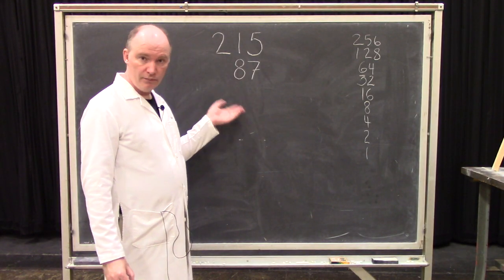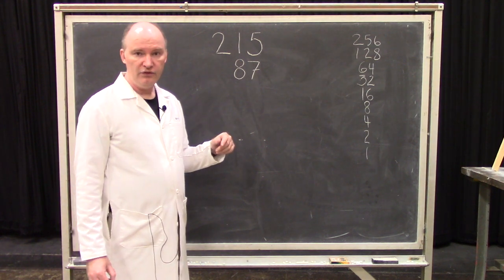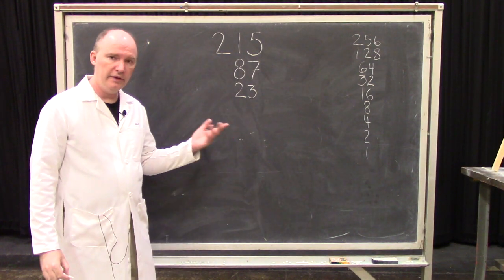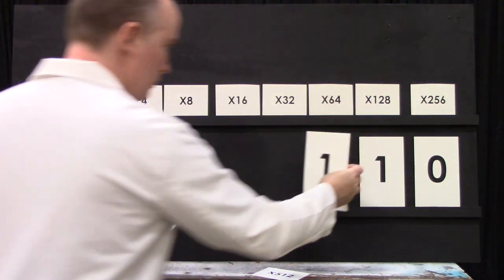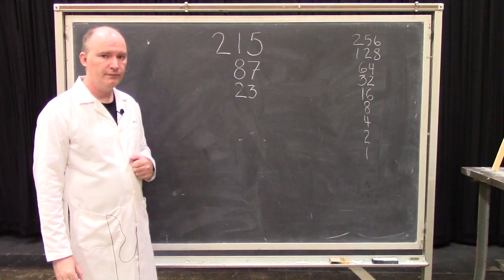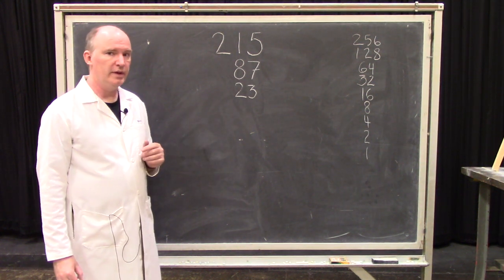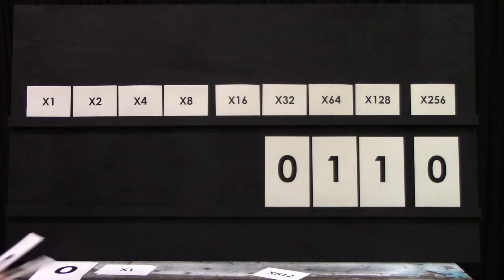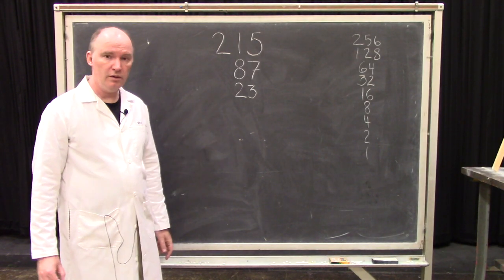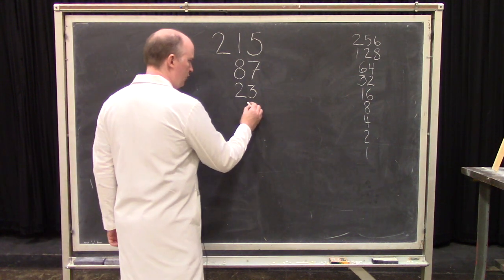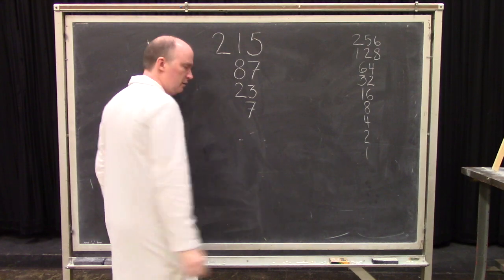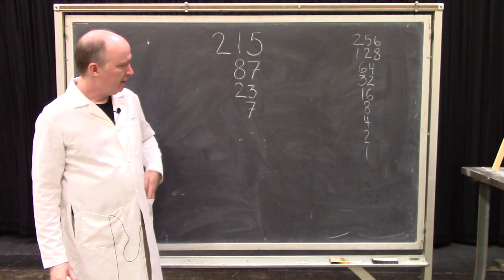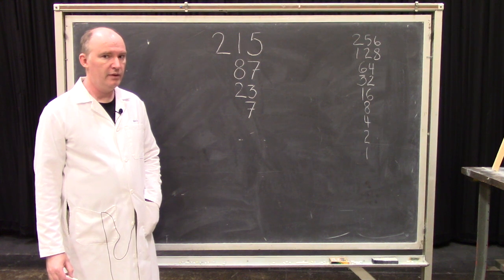Now 64 is also smaller or equal than 87, so we subtract 64 leaving us with 23, and we put a one in the 64s place. 32 is greater than 23, so we put a zero in the 32s place. 16 is smaller or equal to 23, so we subtract 16 leaving us with 7. 8 is larger than 7, so we put a zero in the eights place.